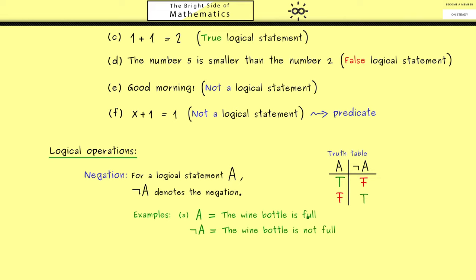Of course here we assume that you know which wine bottle we talk about and what full means, but then you see negation is very easy, just putting in not at the correct position. An important thing to note here is that this is not the same as saying the wine bottle is empty. In other words, negation does not mean the complete opposite, it just means switching the truth values.